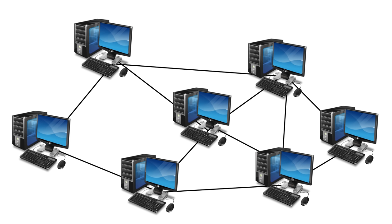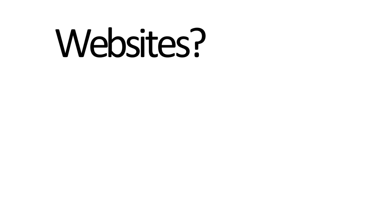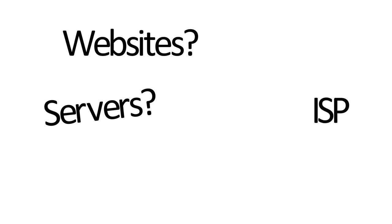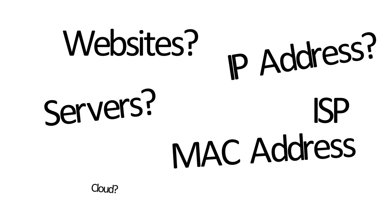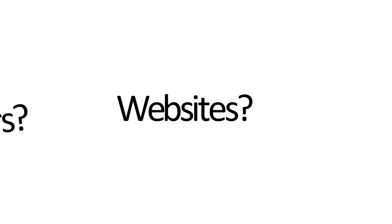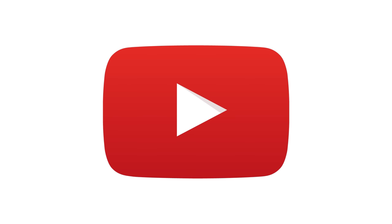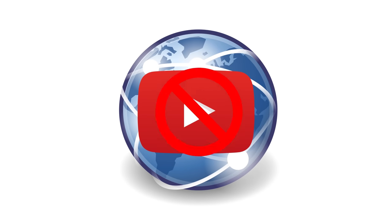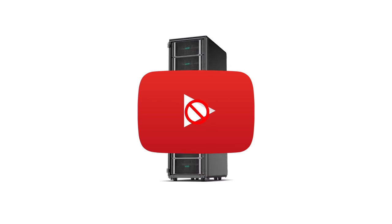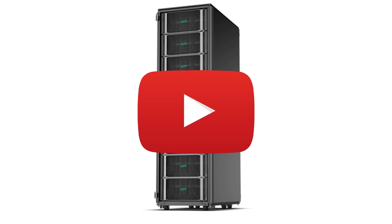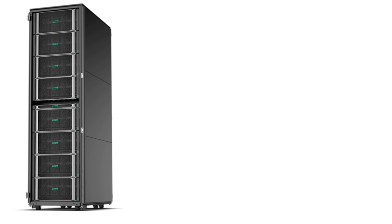With the internet being this simple, what are websites, servers, ISPs, IP and MAC addresses, or the cloud? Let's start with a website, like YouTube. As I said earlier, your YouTube channel, the comments, videos, and likes don't exist on the internet — they exist on a computer somewhere that's connected to the internet. These computers that host data composing a website are known as servers. These computers are made in a very specific way to be able to store lots and lots of data and to be able to send and receive it very quickly.